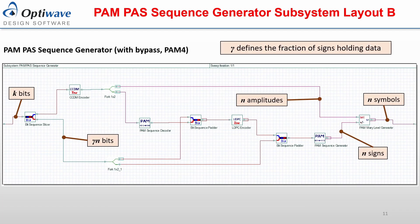Shown here is the implementation of this system in OptiSystem, which corresponds closely with subsystem layout B of the PAM-pass sequence generator. The input bit sequence length is represented by k, and the output symbol sequence length by n. At the input, the original bit sequence is separated into two smaller sequences using the bit sequence slicer component, where the first is sent to the CCDM encoder and the second is used for the generation of the sign symbols. The size of the latter sequence is controlled by the parameter gamma. These bypass bits are then padded with the amplitude bits prior to LDPC encoding. Following the LDPC encoder, the generated parity bits are padded with the bypass bits and sent to the PAM sequence generator to form the n sign symbols. The amplitude and signs are then multiplied together to form the full PAM sequence.